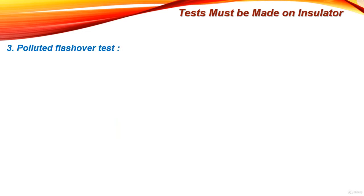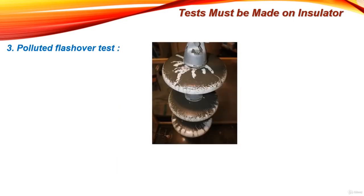The third test is the polluted flash-over test. In this test, the insulator is tested under polluted conditions. We put dust, smoke, salts, or fog on the insulator and then test it. The aim of these first three tests is to check the insulator performance and efficiency at different environmental conditions like rain and dust, which actually occur in any place in the world.